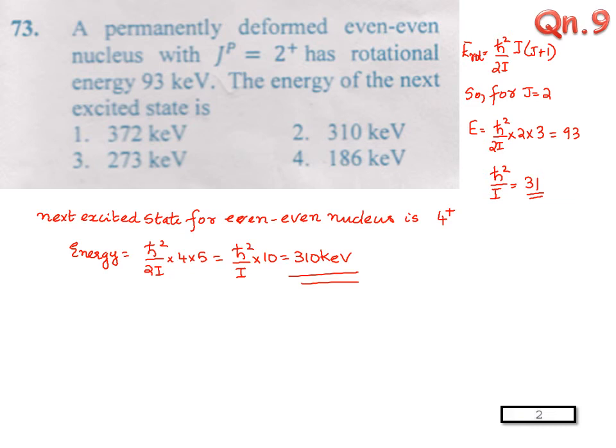And the next excited state for even-even nuclei is 4⁺. That is the condition. For even-even nuclei, the next excited state will be 4⁺. So substituting, we will get 310 KeV. So the answer is 2.